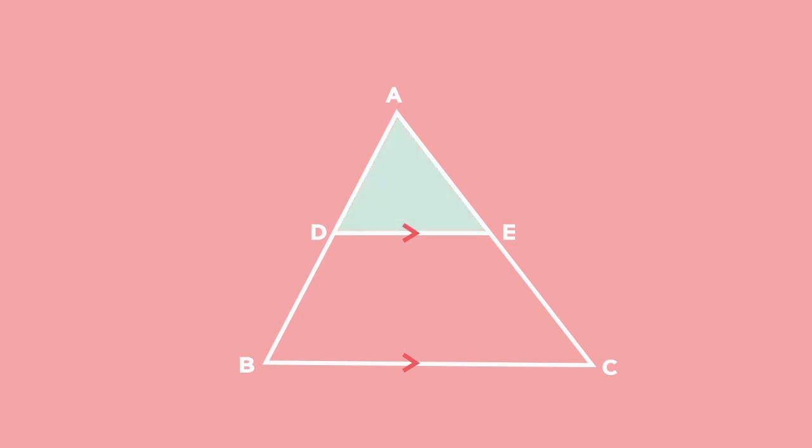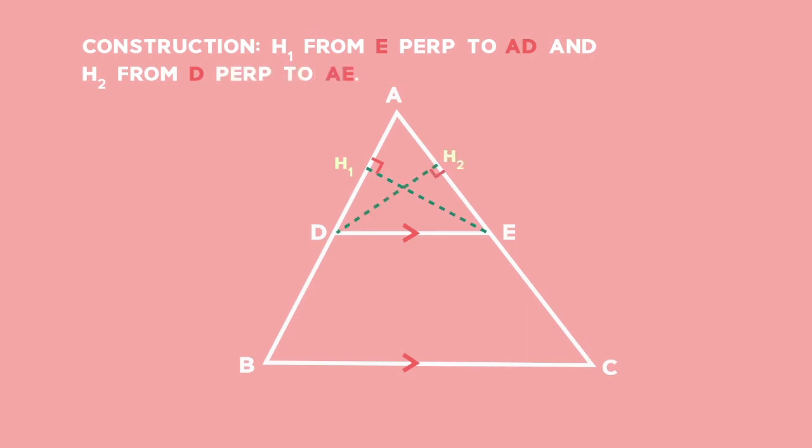To find the area of triangle ADE, we need to construct perpendicular lines to show the height of the triangle. Draw H1 from E perpendicular to AD. H1 is the one height of the triangle with AD as the base. Now draw H2 from D to the base AE. Finally join CD and BE. This creates new triangles CDE and BDE, which are needed for proof.